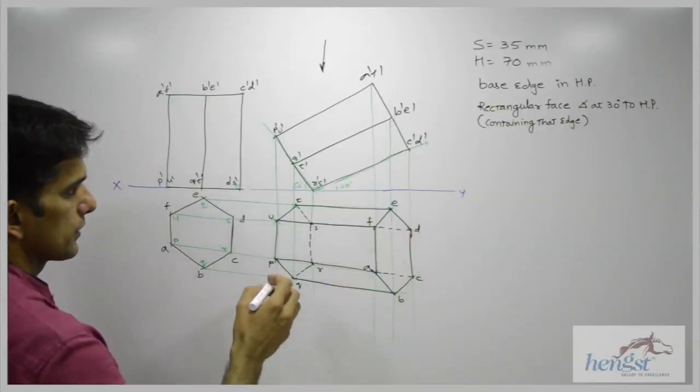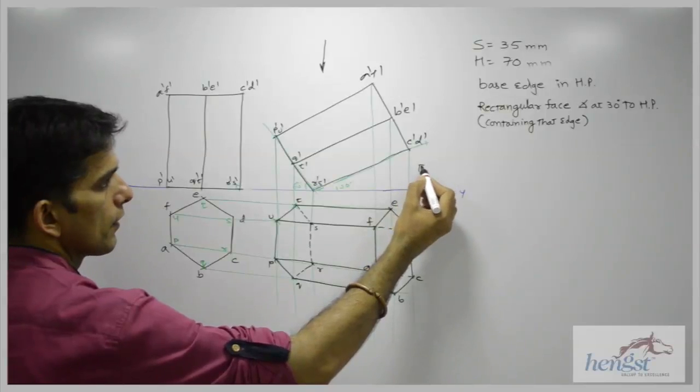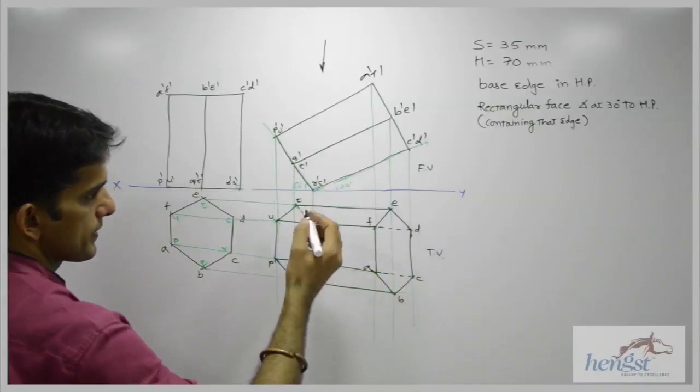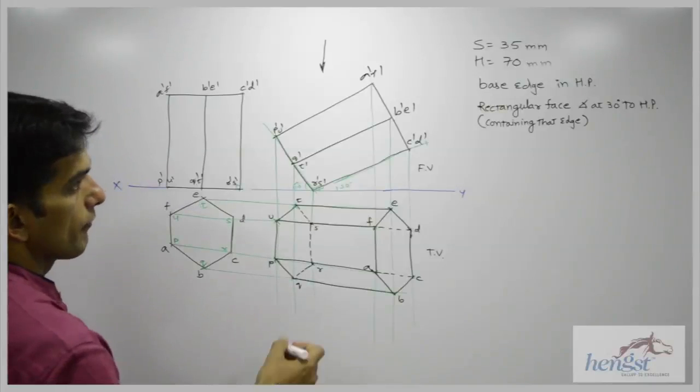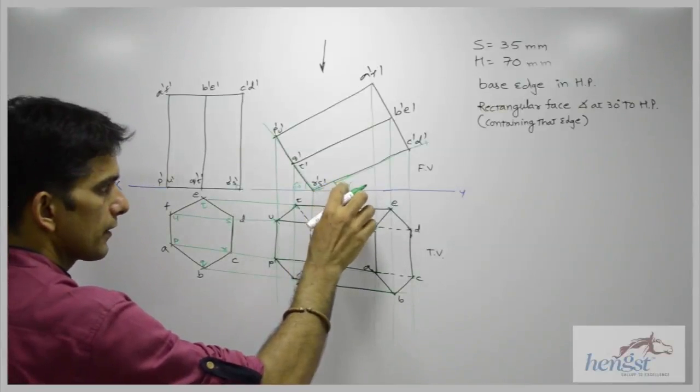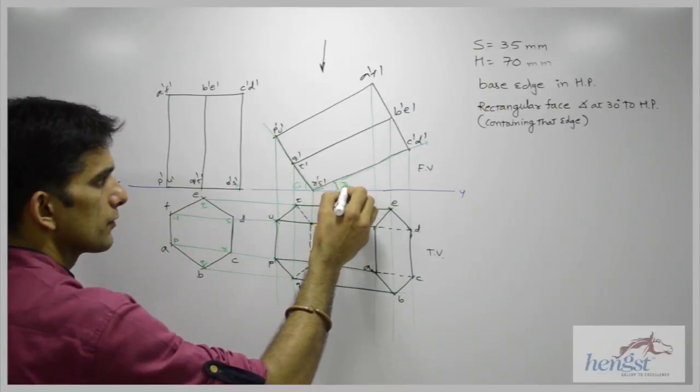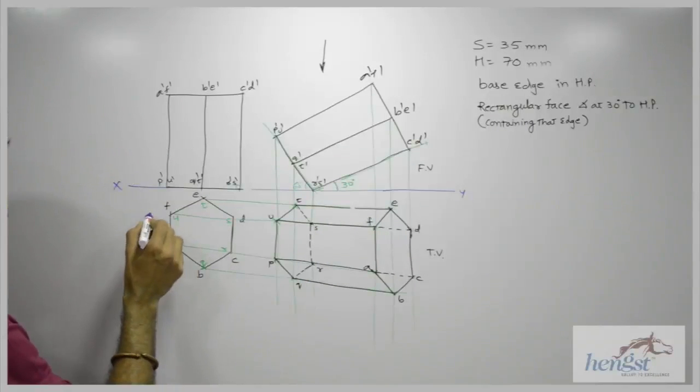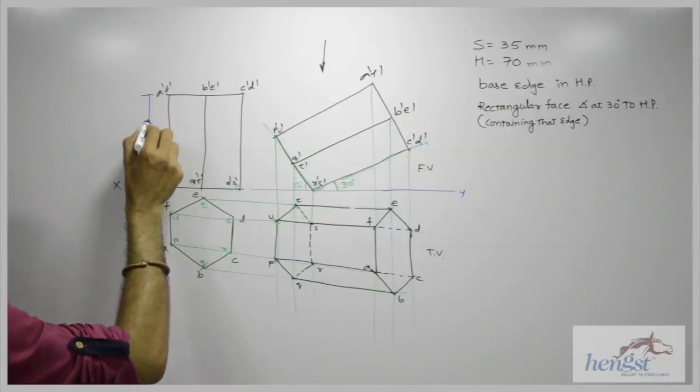So we are done with the projection. That means we are done with the front view and top view of our hexagonal prism when one of the rectangular faces is inclined 30 degrees to horizontal. We can do dimensioning as well. This is 35, this is 70.